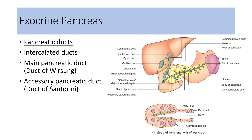Various intercalated ducts empty pancreatic juice inside the main pancreatic duct. This main pancreatic duct is known as the duct of Wirsung, which travels from the tail of the pancreas up to the head of the pancreas. It becomes continuous with the hepatic duct and forms the hepato-pancreatic duct. The opening of the hepato-pancreatic duct is guarded by a sphincter known as the sphincter of Oddi. The accessory pancreatic duct, whenever present, opens inside the first part of the duodenum and is known as the duct of Santorini.